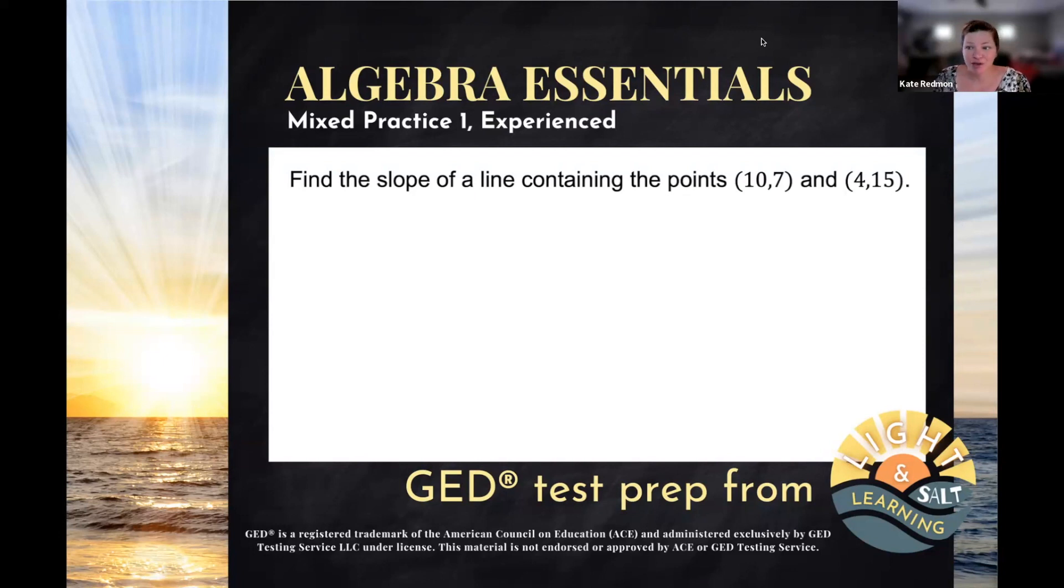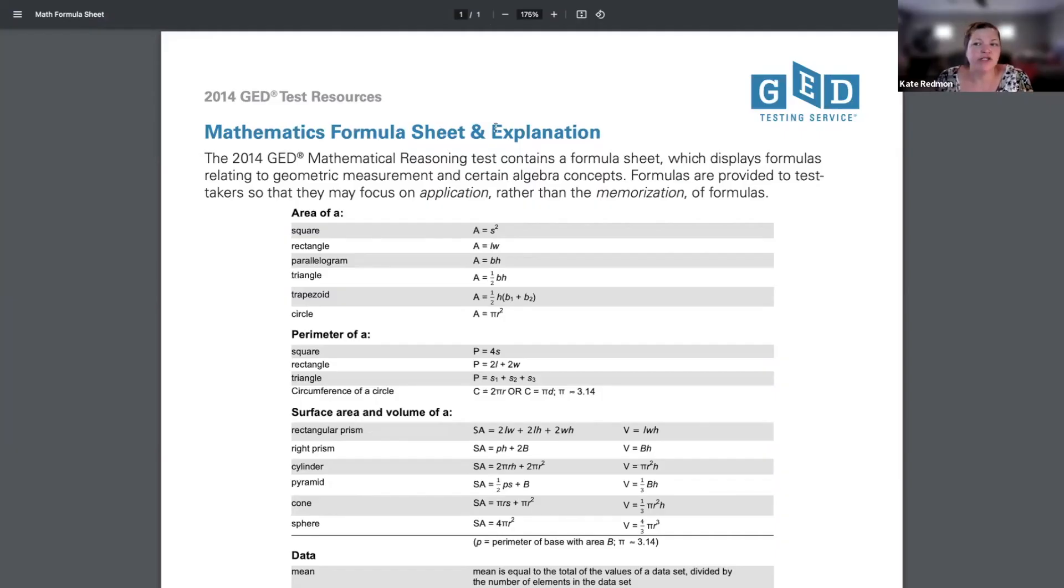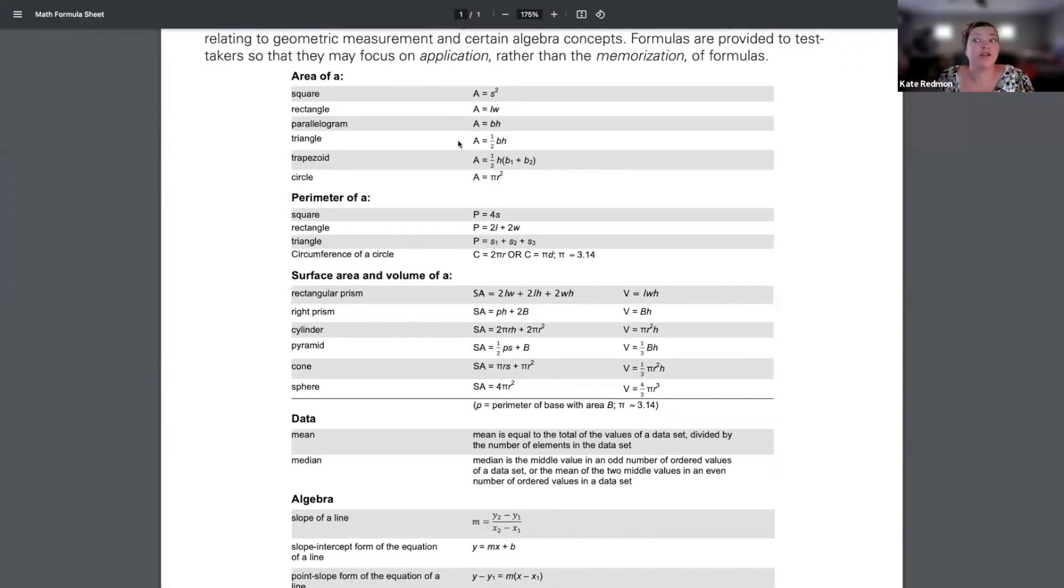Turns out on the GED formula sheet, there's actually three formulas that involve slope. Let's go take a look at them. So here is the GED formula sheet. And just an FYI, if you're taking the HiSET, you don't get this same sheet, okay? So you should be using yours.